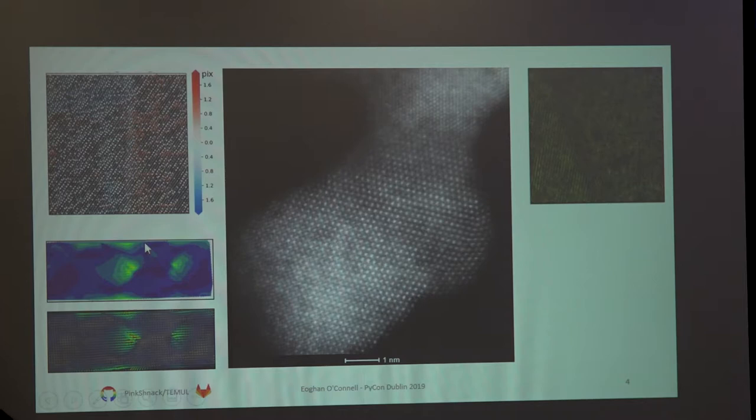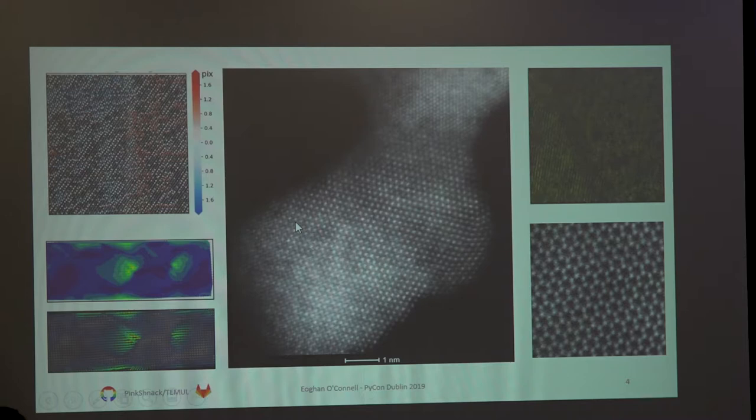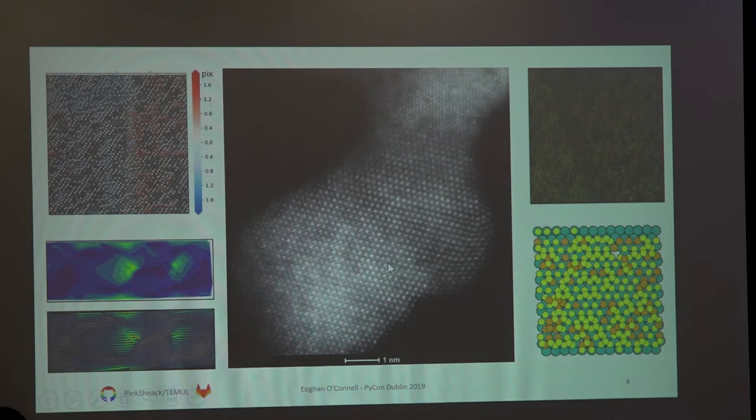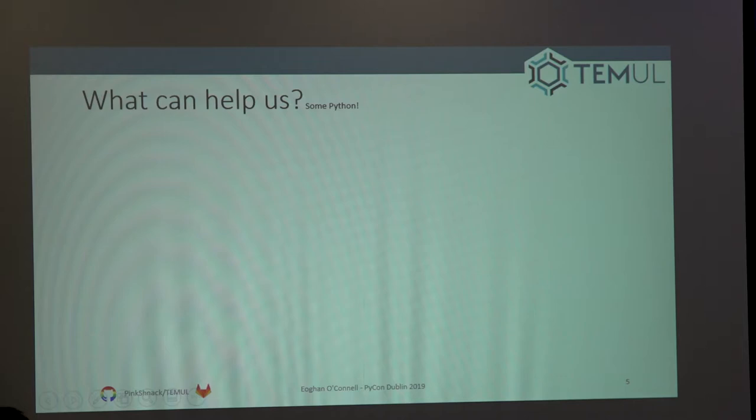We can also see very exotic materials called skyrmions — they're quite new — which are basically vortexes in three dimensions where the material is actually twisting. We can also expand atomic images into movies where we can see atoms moving around. This isn't temporally resolved, so you can't say exactly where an atom is at a given time, but you can make a good guess.